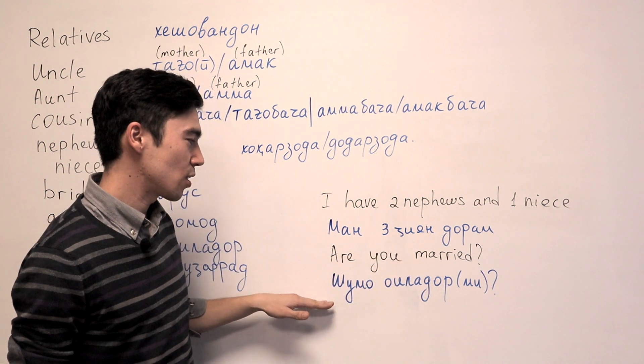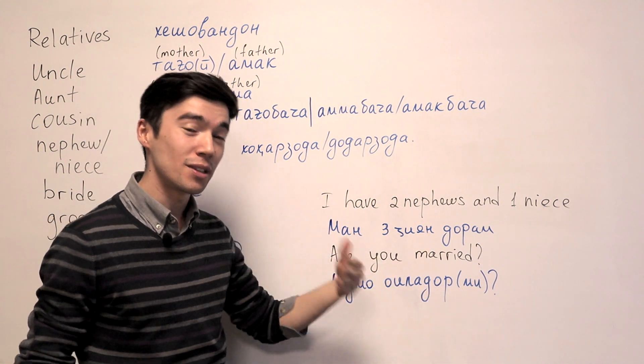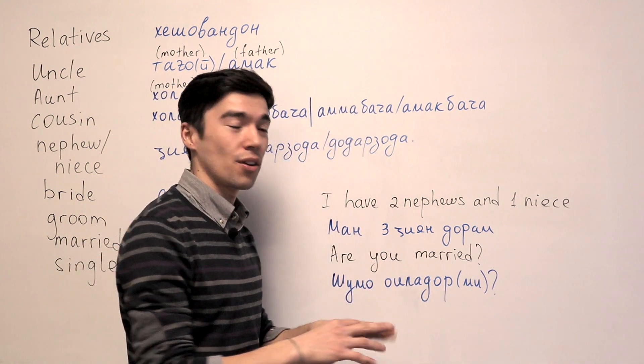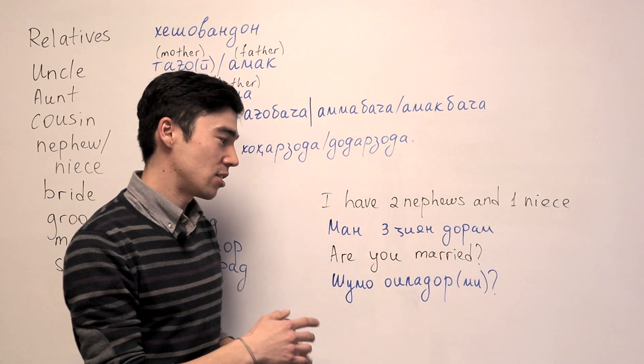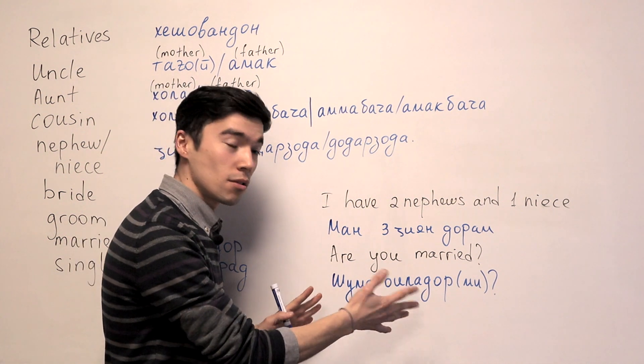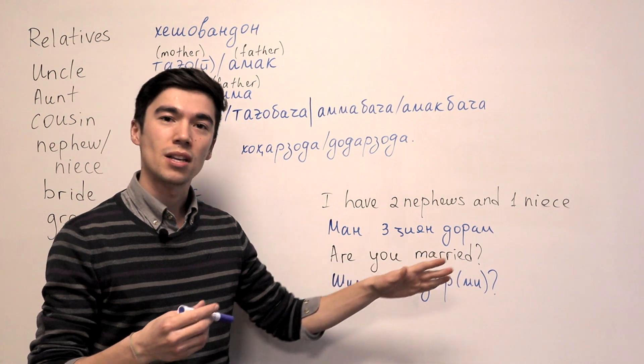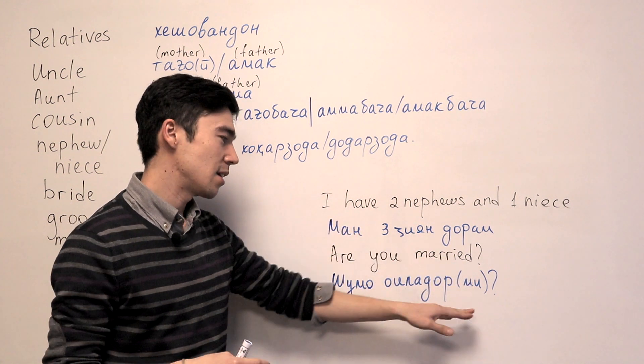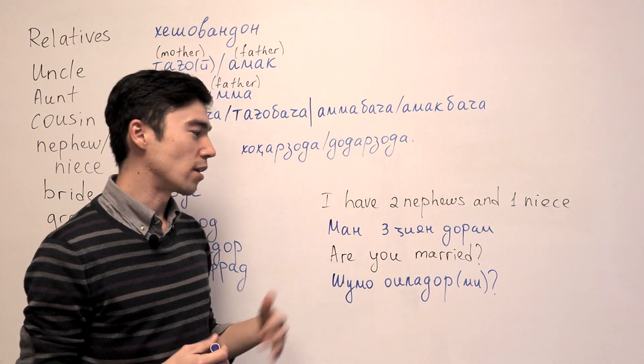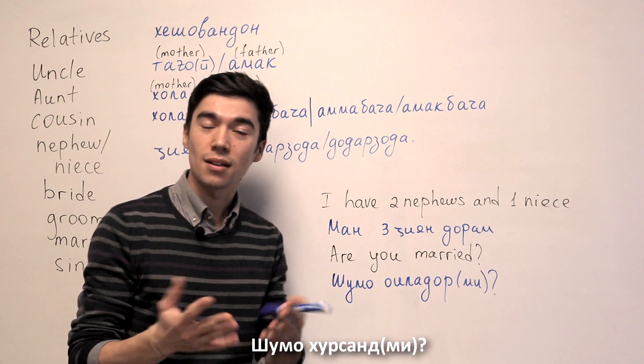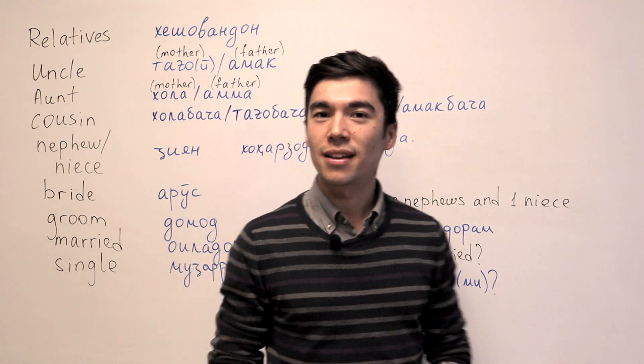And another example. Are you married? Shmo Oylador me. We say in the north part, we say Oylador me. In the south, they don't use me. They can just say Shmo Oylador. Like this. But we use me at the end. It's like Chinese. They add Ma at the end. We say Mi. Shmo Oylador me. Shmo Khursan me. Are you happy? So something like that.